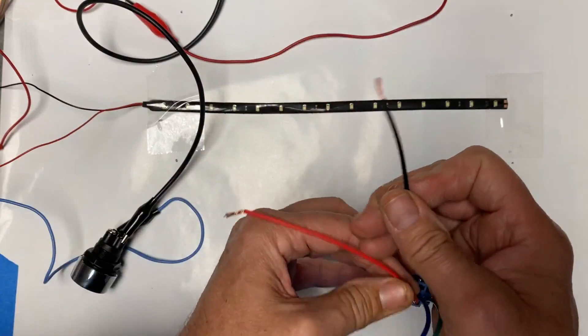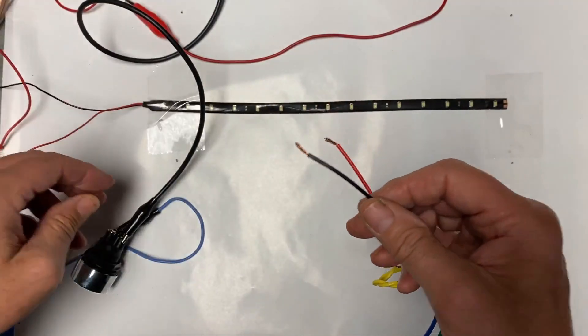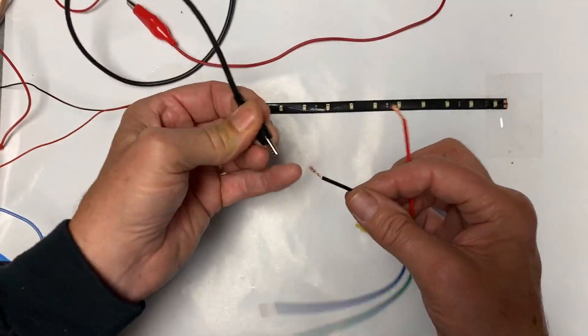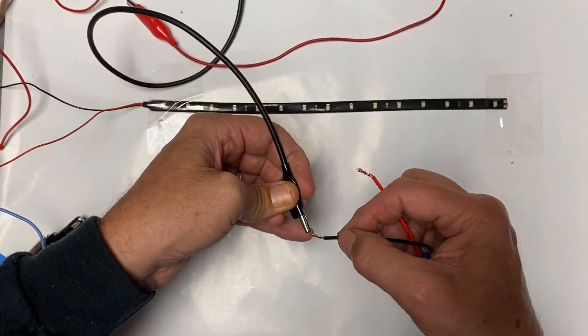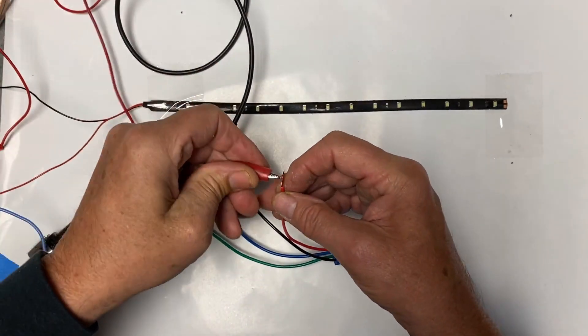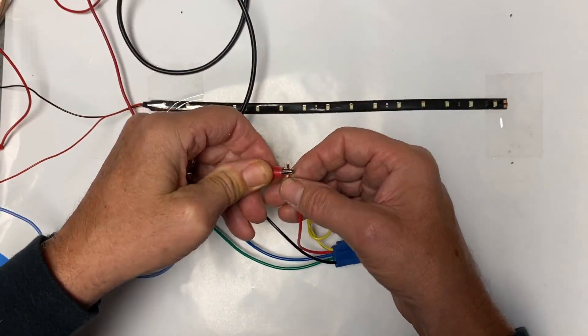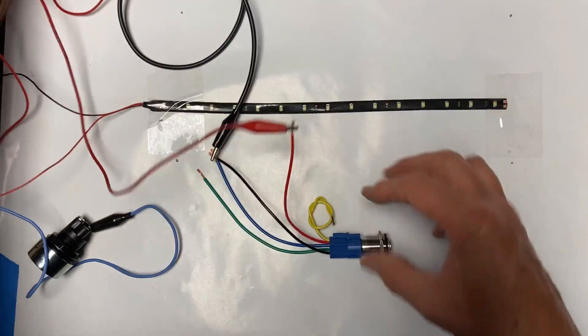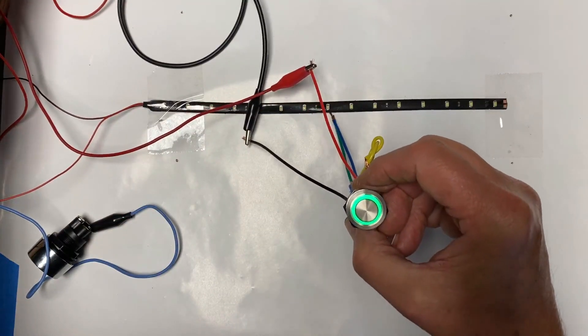Let me show you the light ring. We'll connect the negative and the positive. And that activates the light ring.